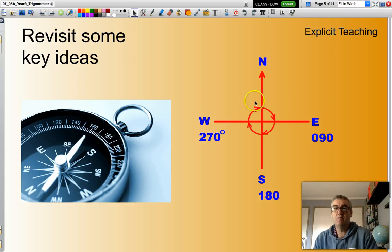Just as a recap, you would have learned this in previous years. There are 360 degrees in a circle and likewise there are 360 degrees within a compass.